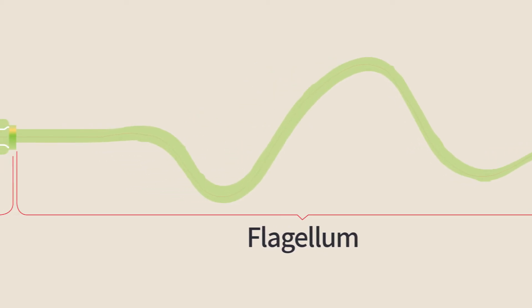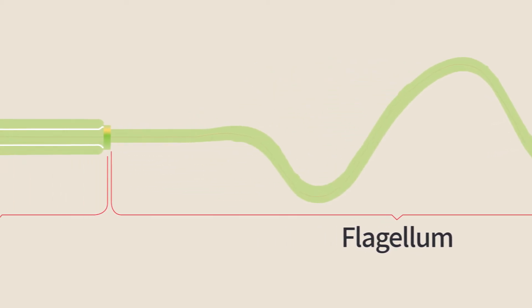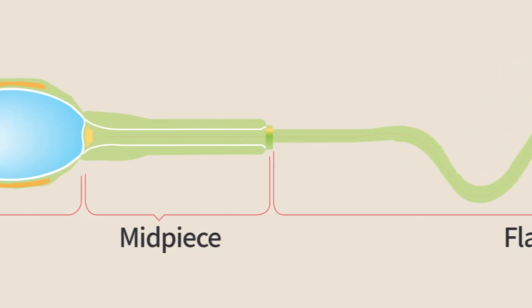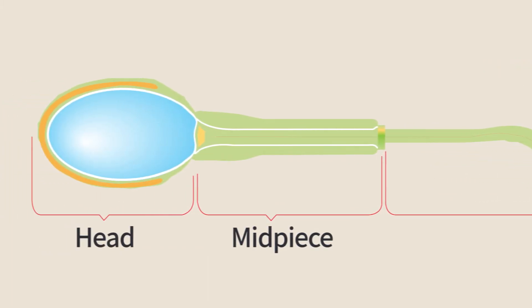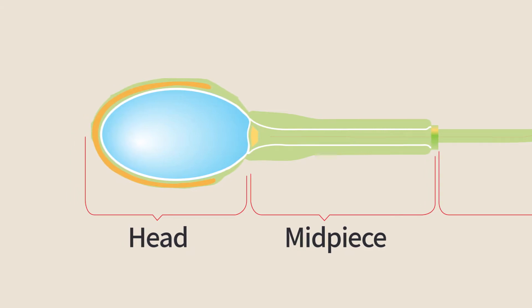Sperm is a highly specialized cell that is well adapted to transferring the genome fast and efficiently to and into the egg, while overcoming huge obstacles in its way. Everything that does not serve this mission is eliminated from the sperm cell.